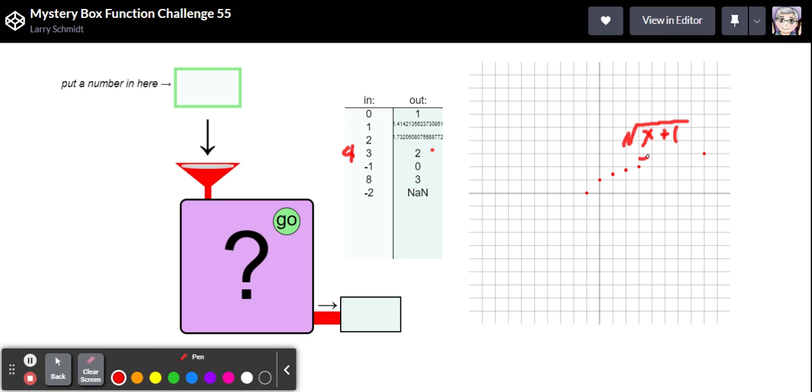Now if you put in a negative one, negative one plus one would be zero, and the square root of zero is zero, and that would get us that one. Let's try it with eight. So eight plus one would be nine, and the square root of nine is three, and that's what we get when we put in eight. So I think our function is f(x) equals the square root of x plus one.